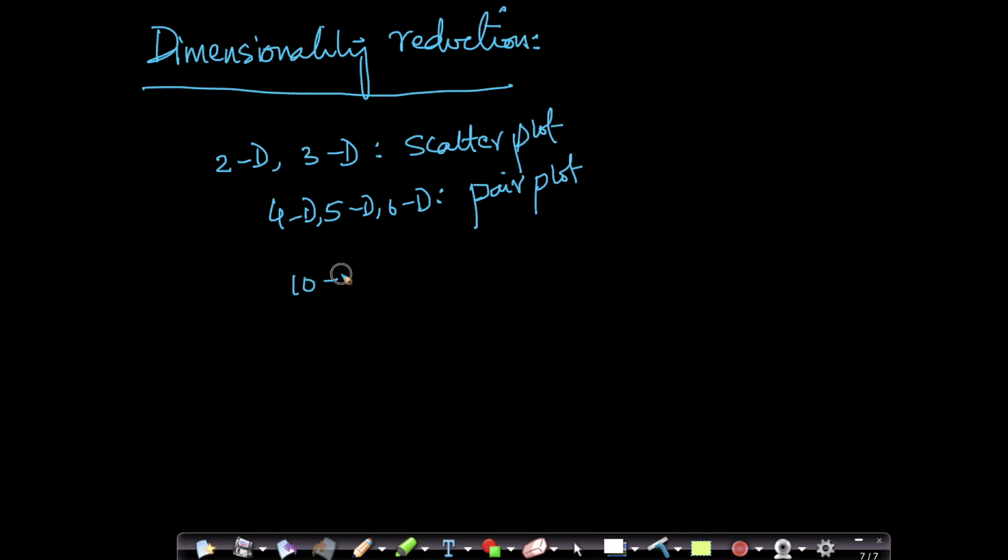What if you have 10-dimensional data? We realized that if you have n-dimensional data, the number of scatter plots in a pair plot is n choose 2. So as n increases to 10 or even 100 dimensions or even 1000 dimensions, pair plots will not work. So how do we visualize and understand data which is very high dimensional?